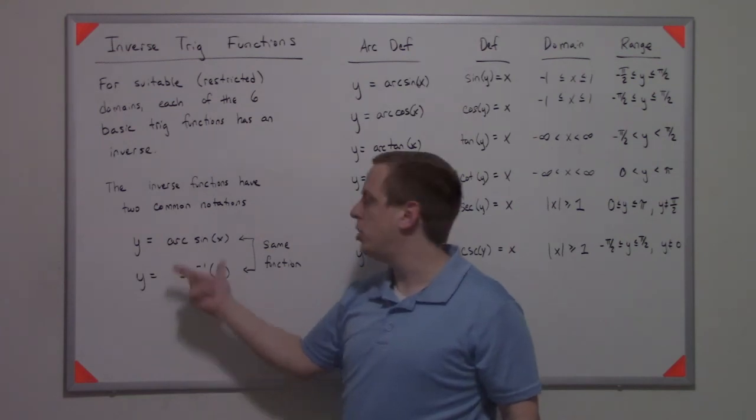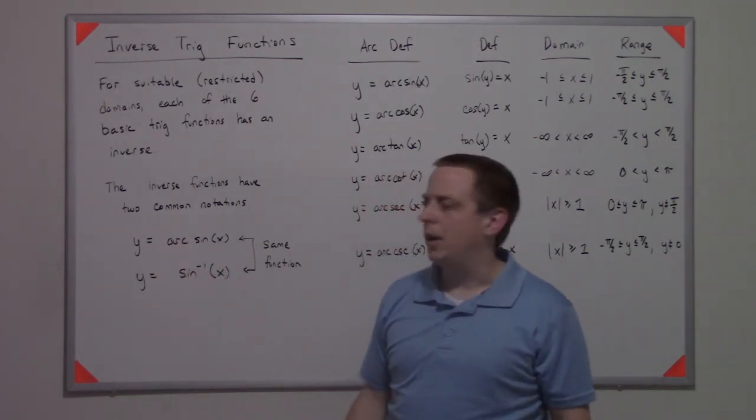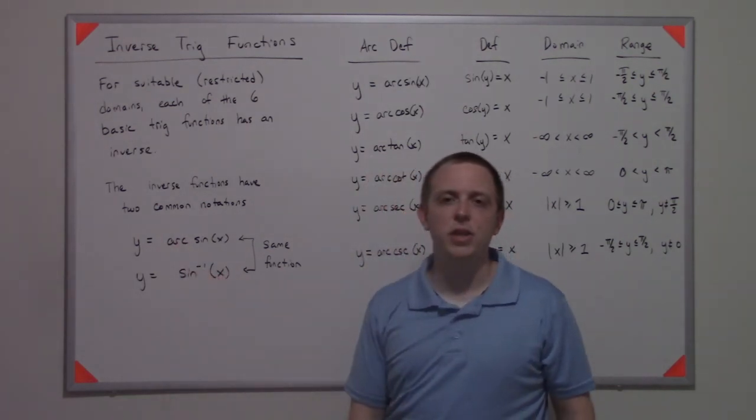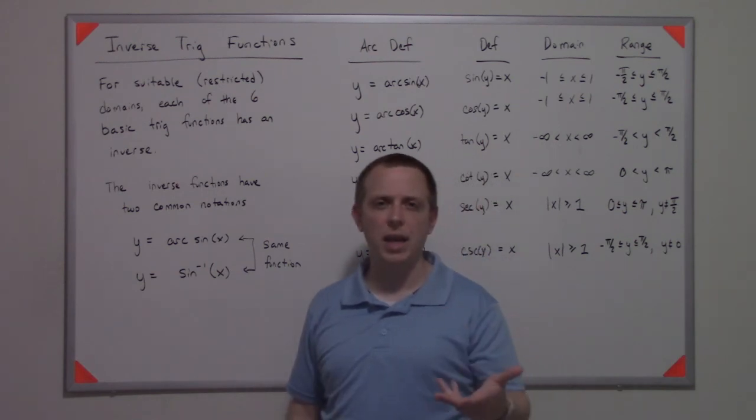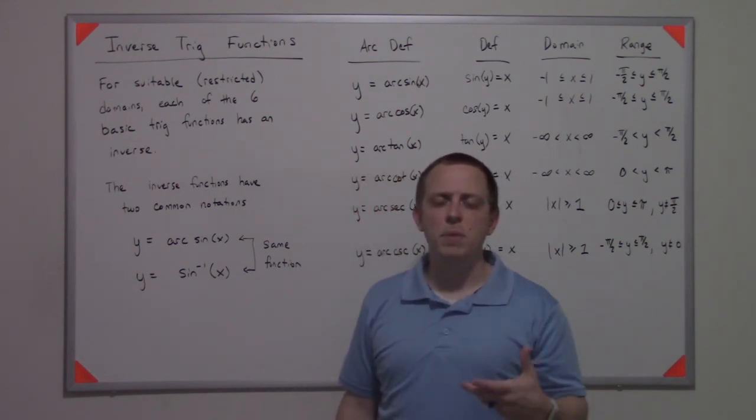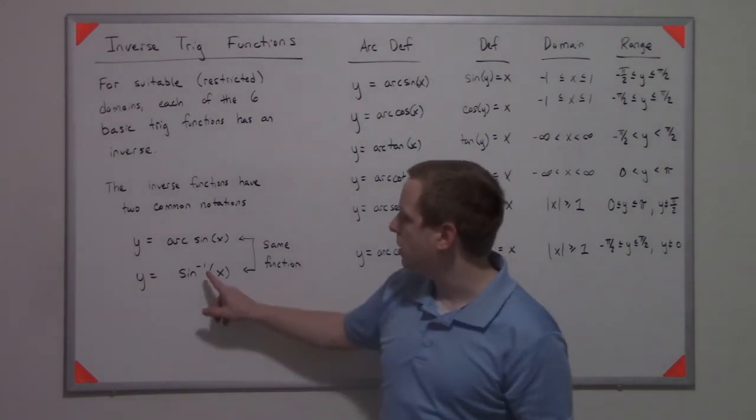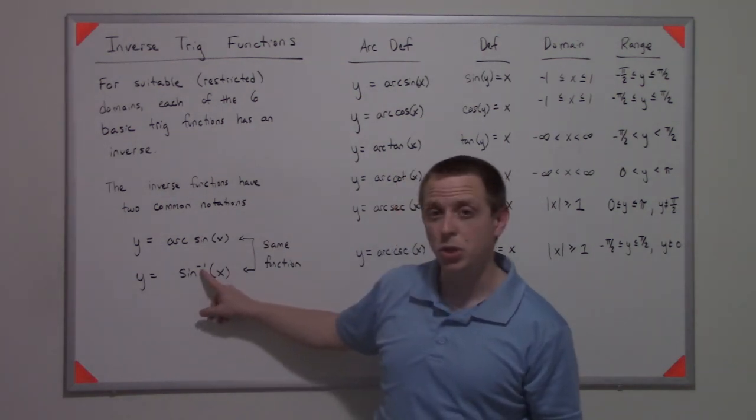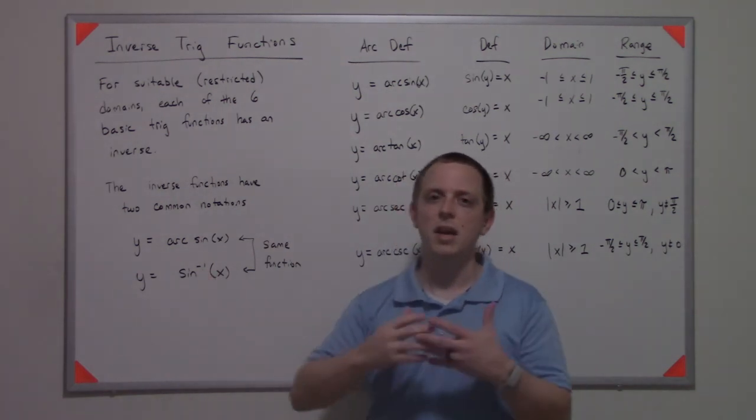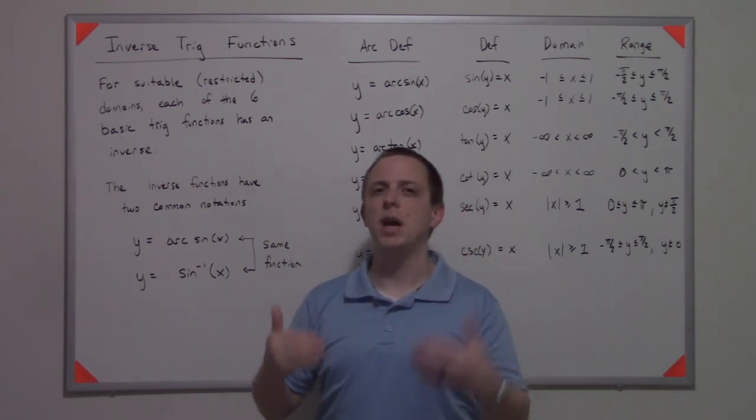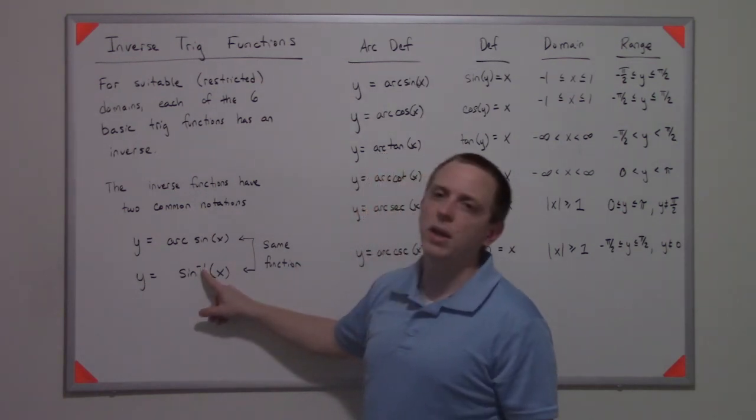This is kind of a cleaner notation than arcsine, but it has the disadvantage that it uses that negative one, kind of like inverses do. It's an ambiguous notation because if you had written sine with a two here - sine squared x - that implies sine x times sine x.